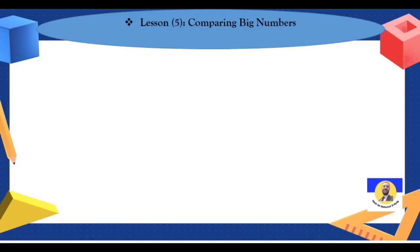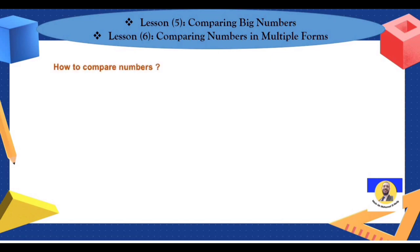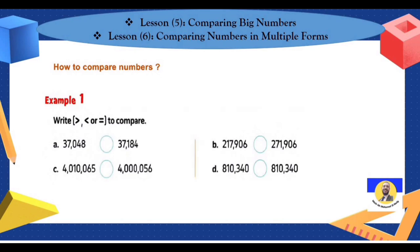Lessons five and six: comparing big numbers and comparing numbers in multiple forms. Comparing means we need to determine less than, greater than, or equal. When a question asks how to compare numbers, how can we compare between two numbers? I know you've learned this before and are good at it — knowing which number is big and which is small.